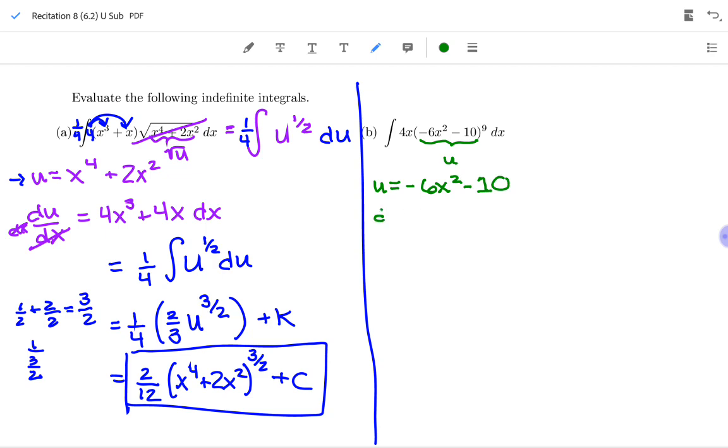And so the derivative of that, du dx, the derivative of negative 6x squared is negative 12x. The derivative of negative 10 is just 0, so we have negative 12x, and then we're going to bring our dx up so that we have du all by itself.